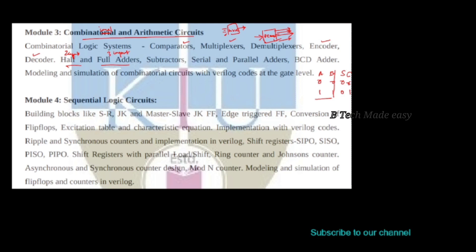Module 3 also covers half subtractor, full subtractor, serial and parallel adders, and BCD adder. The subtractor is called half subtractor and full subtractor — a very simple topic. Topics include comparators, multiplexers, demultiplexers, encoders, decoders, half and full adders, and half and full subtractors.